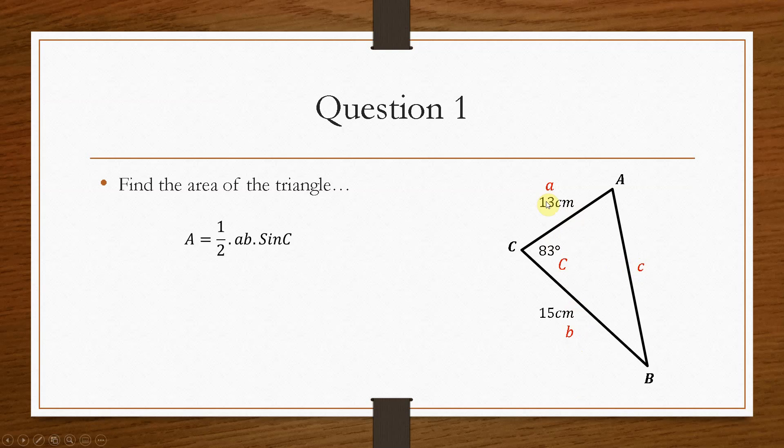This could be a and this could be b. It doesn't matter which way round it is. What is important is that this 83 is capital C, meaning that this is small c. Once we have it labelled, all we have to do is substitute in the values.